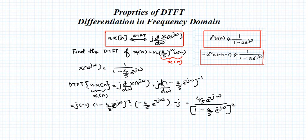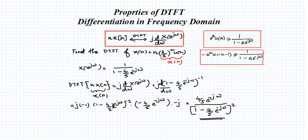This is the final answer. This is a very important property — in exams, questions often appear in the form n·x(n). Directly computing the summation is very difficult, so always prefer the differentiation property. When you see a signal of the form n·x(n), group it accordingly and apply the differentiation property to get the result quickly.